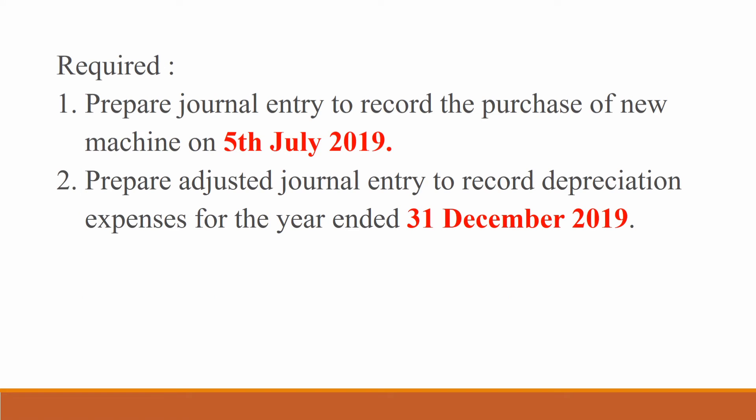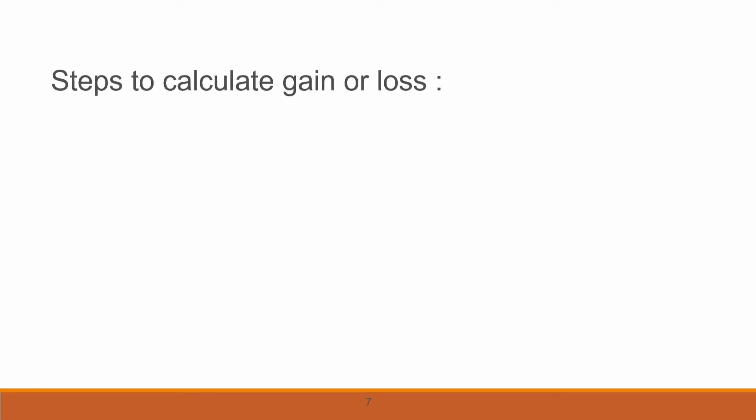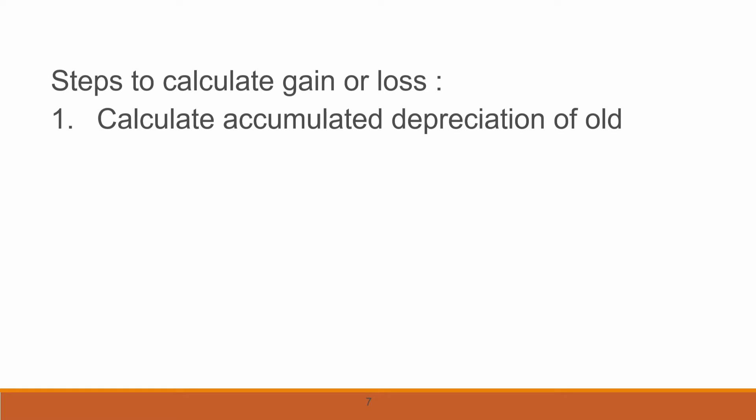You are required to: (1) prepare the journal entry to record the purchase of the new machine on 5th July 2019, and (2) prepare the adjusted journal entry to record depreciation expense for the year ended 31st December 2019. Before preparing the adjusted journal entry, there are a few steps to calculate gain or loss.